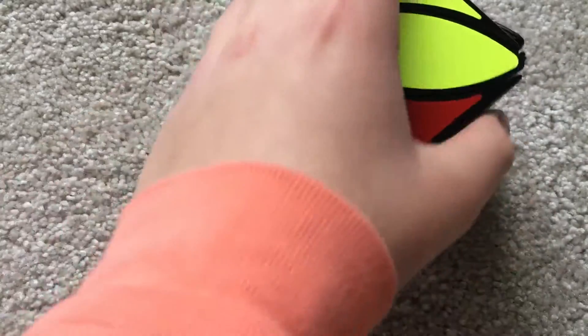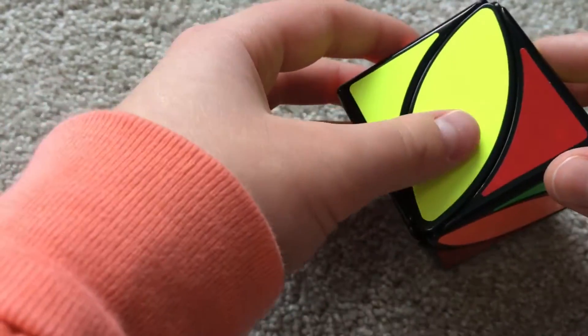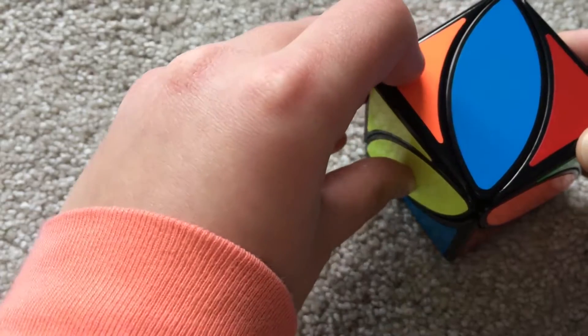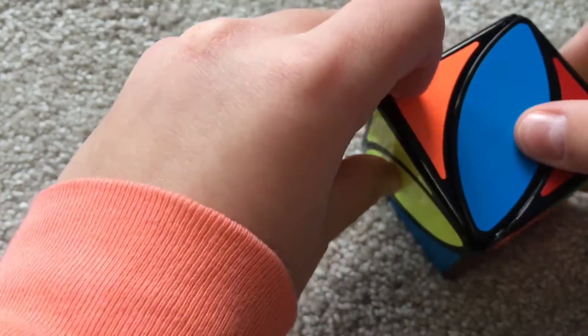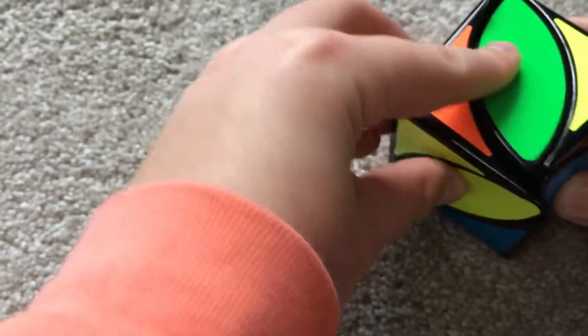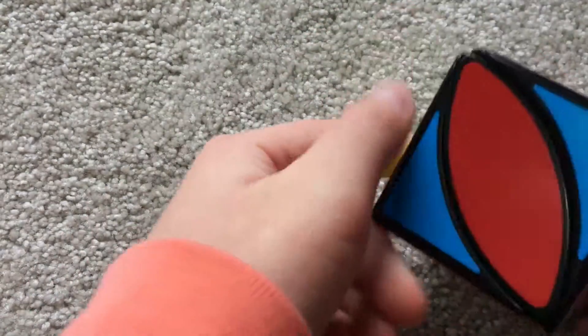Then in the next layer you're going to have to solve the other side first. Like that thing I told you we're gonna use later, where you move this piece out of the side and put it back in. We're going to use that exactly to solve the second layer.